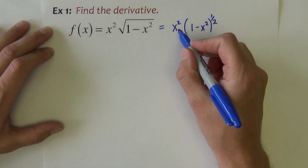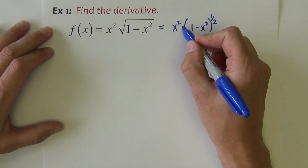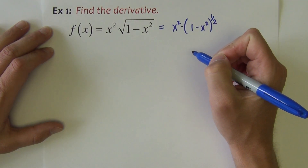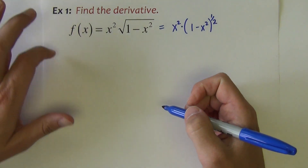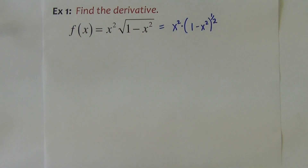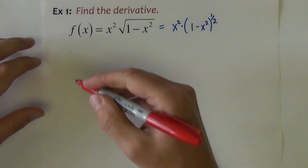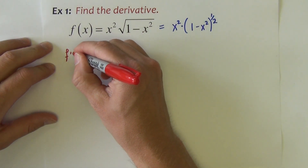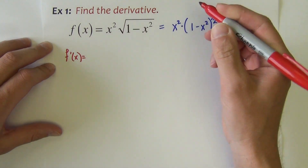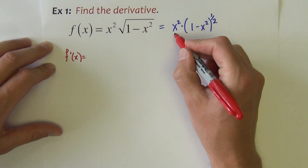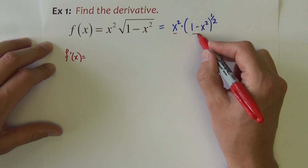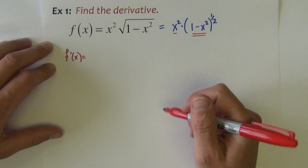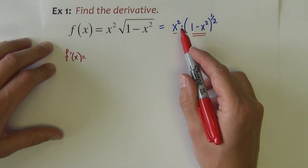Now I can see that between the x squared and this binomial quantity, we have a product, so we're going to run a product rule on that as we begin the derivative. I've got two pieces: the x squared piece and the (1 minus x squared) to the 1/2 piece. They are multiplied together.